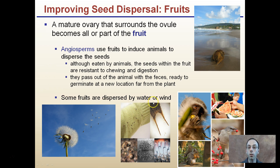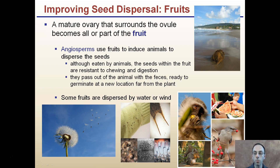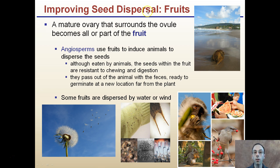Some fruits are dispersed by wind or water — the coconut by water and the dandelion by wind. A bird picking up a berry isn't bad for the plant; it's being dispersed to different regions. Watermelons, monkeys, and squirrels are other examples. Seeds can also physically attach to clothing or animals through burrs. All of these are ways plants have evolved to disperse their seeds and establish themselves in new locations.